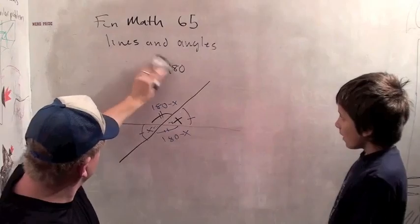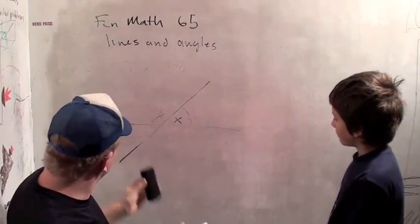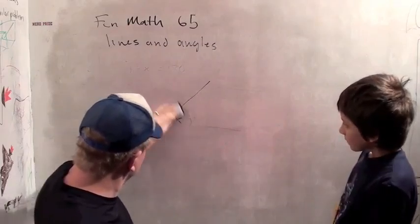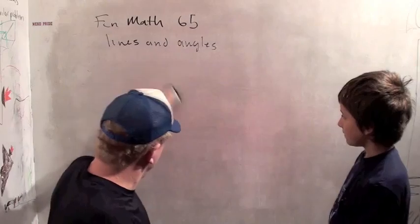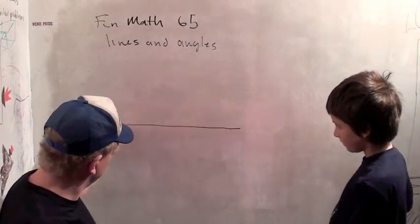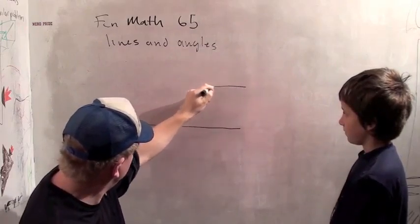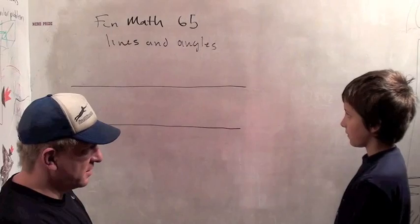Or, yeah, about intersecting lines. Now we have another concept in geometry called parallel lines. And parallel lines are two lines in a plane, like on the, I was going to say the chalkboard, but this isn't really a chalkboard. What is it? It's a white board.